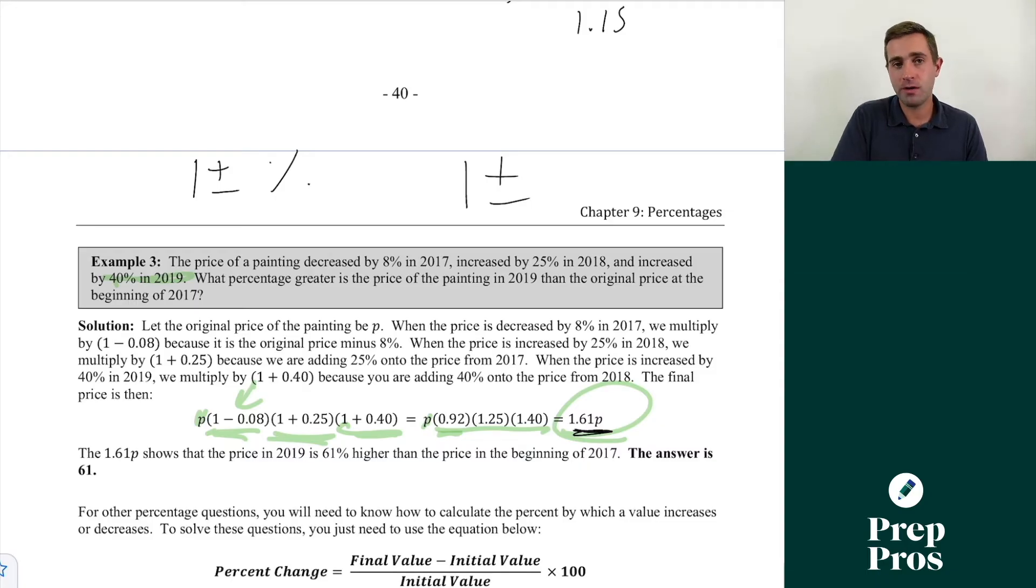Since we see 1.61, the 0.61 is going to show us how much we increase by. So therefore, that's going to be 61% higher than the price back at the start of 2017. The big framework you're always looking out for is 1 plus or minus. That is what all of these questions kind of come back to. So now we're going to jump back to those examples from these recent SATs.